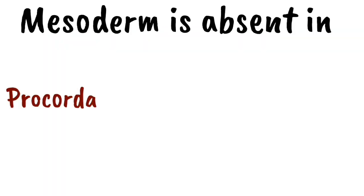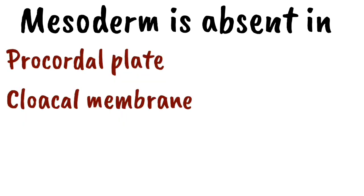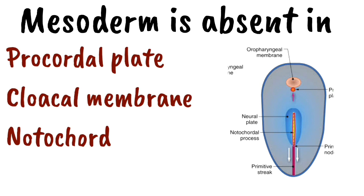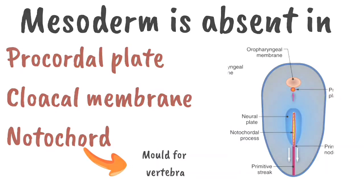The cloacal membrane will eventually form the opening of the anal canal. The next region lacking mesoderm is the notochord, which is formed by the elongation of the primitive streak along the axis of the embryonic disc and later serves as the mold for the formation of the vertebral column.